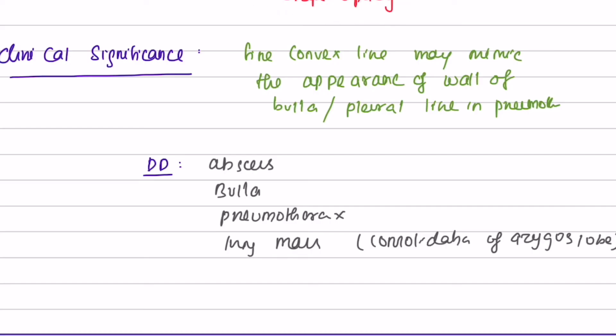Clinical significance: The fine convex line may mimic the appearance of the wall of bulla or pleural line in pneumothorax. The differential diagnosis includes abscess, bulla, pneumothorax, or may mimic lung mass when consolidation of the Azygos lobe happens.